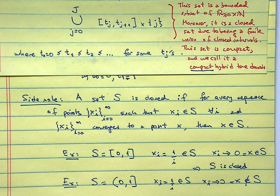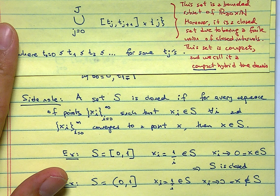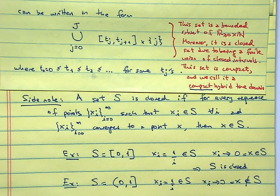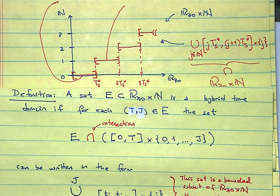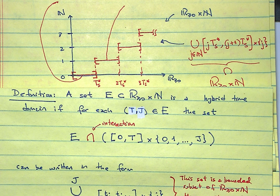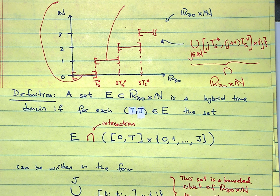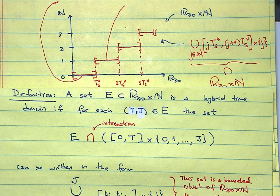Now that we have time defined, let's go back to the timer picture. We have the hybrid time domain — that's where the timer is defined. But we also have the axis for τ_s, which is doing something: that's our trajectory, or the evolution of the state, or the solution to the system. Let's take a five minute break and then think about how we should define the value of the state on the hybrid time domain.